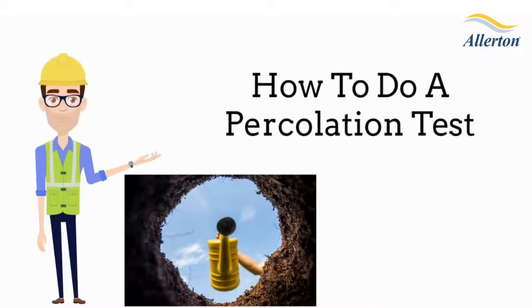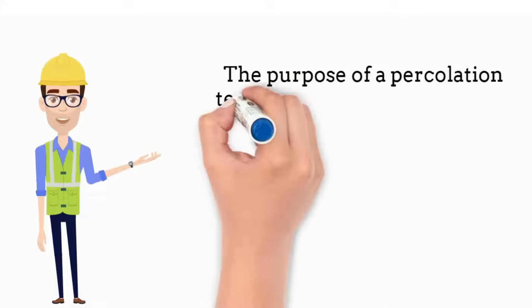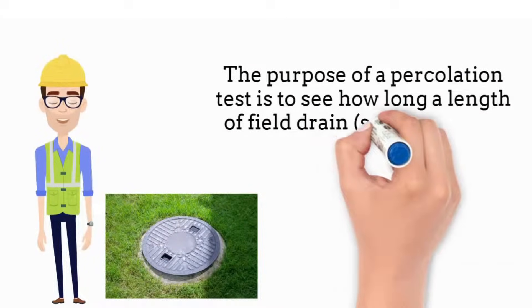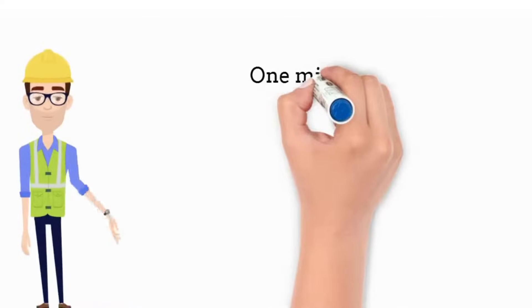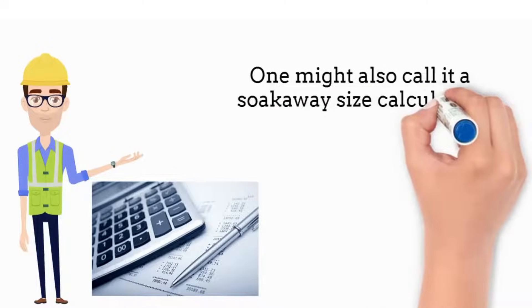How to do a percolation test. The purpose of a percolation test is to see how long a length of field drain you need for your sewage treatment plant. One might also call it a soak away size calculator.